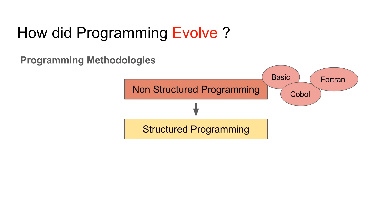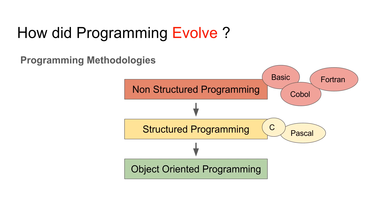The issues with non-structured programming led to structured programming, where the code was organized into structures or modules, and the modules could talk to each other. Languages like C and Pascal were based on this methodology. This was very successful and coding was easy and convenient. But it was felt that for large enterprise level applications we need something more — the programming should be able to relate to real life entities. Due to this, a new methodology was born: object oriented programming. Languages like Java and C++ are based on this.